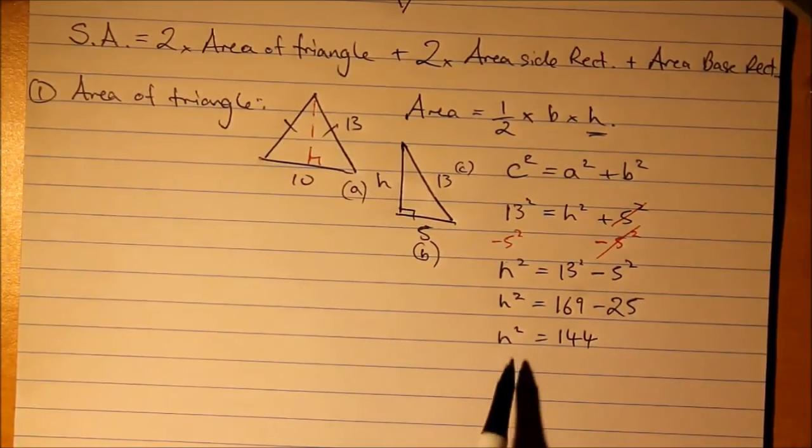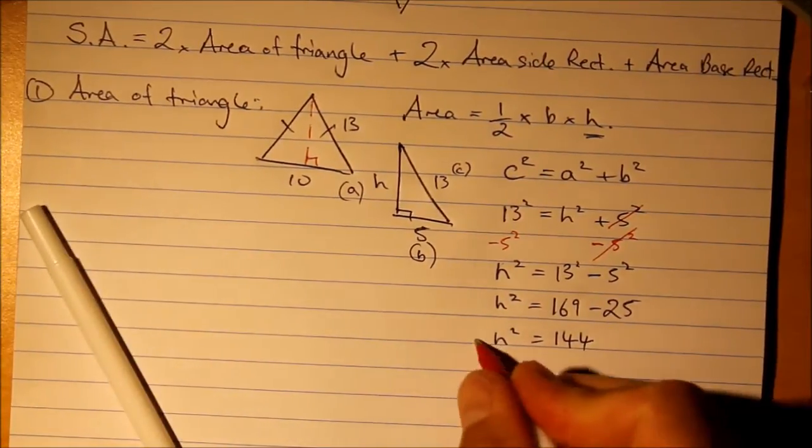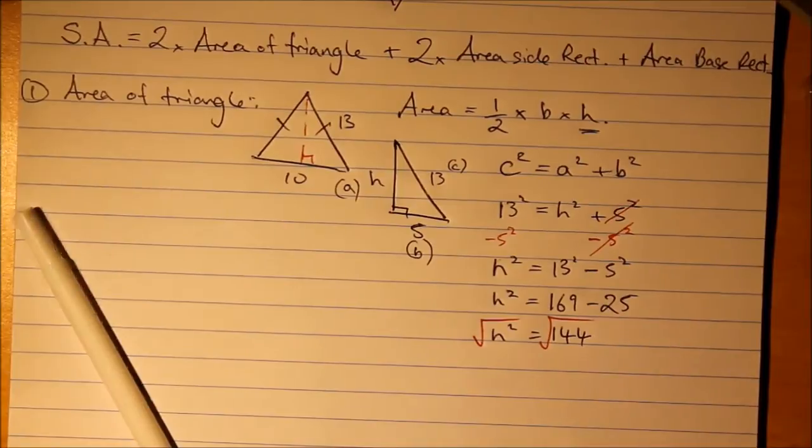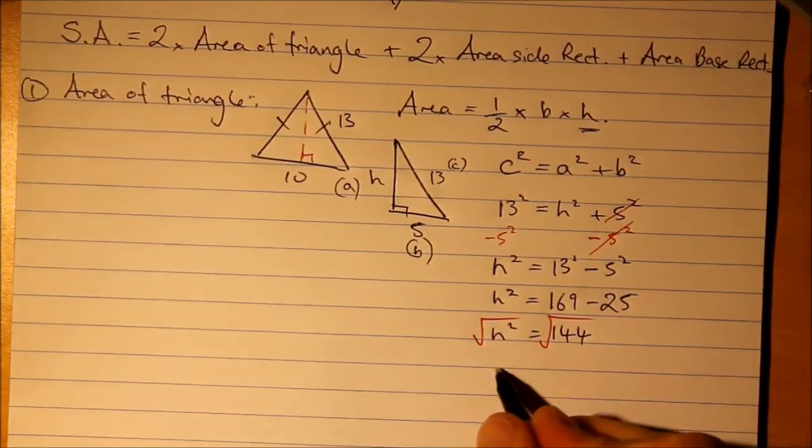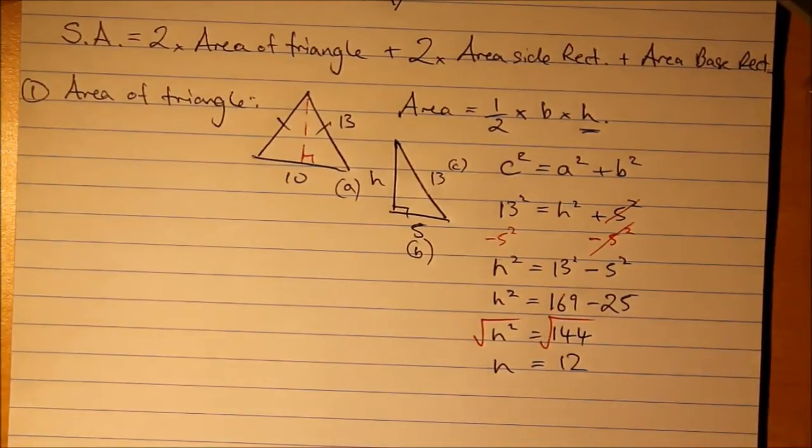Now, we haven't finished. That's not the answer we want. We want h not h squared. So, we would square root both sides and get our answer as 12. Which is good.